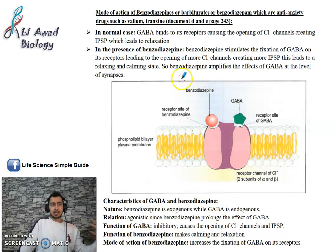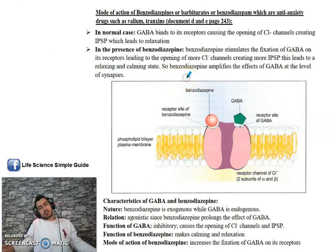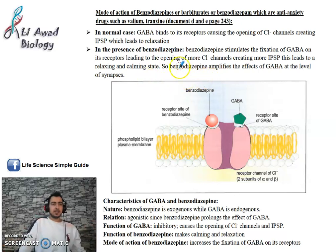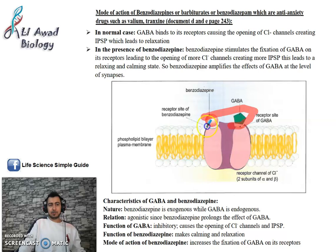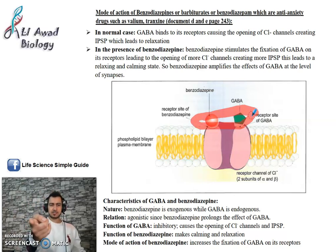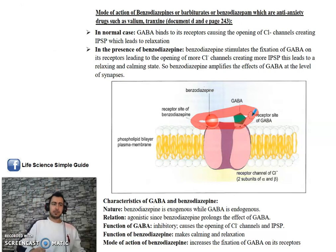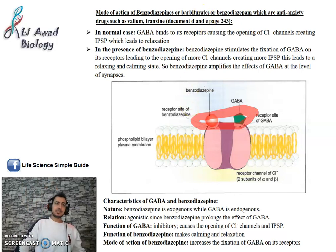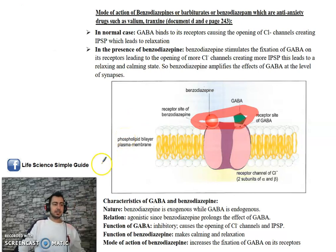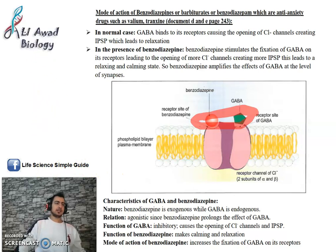In the presence of benzodiazepine, a state of calm and relaxation is achieved — the person becomes very relaxed and inactive, or may fall asleep. Benzodiazepine amplifies the effects of GABA at the level of synapses by keeping GABA fixed on its receptors, so Cl⁻ channels stay open and more IPSP is generated. This covers most of the drugs discussed. Next time we will talk about morphine and pain. Please like, subscribe, and share.